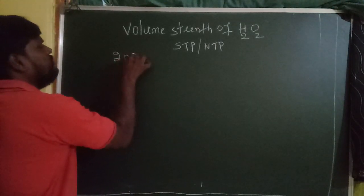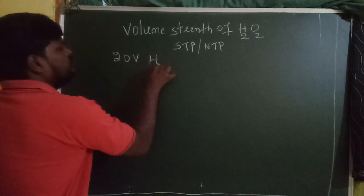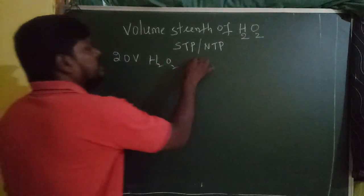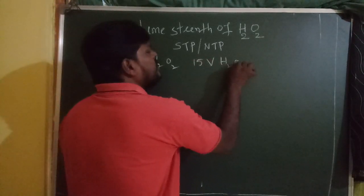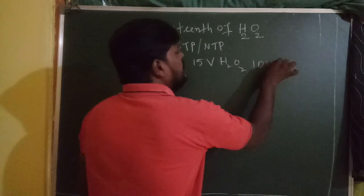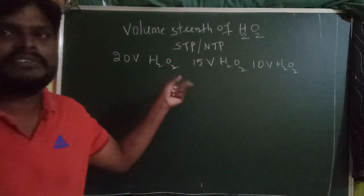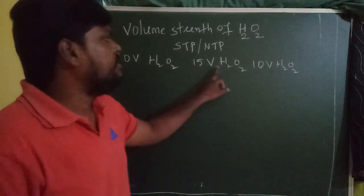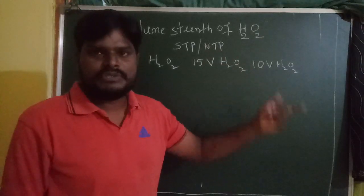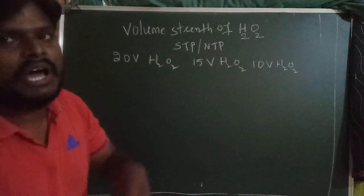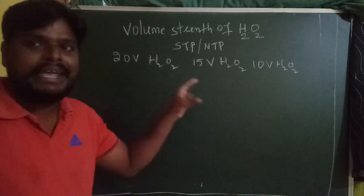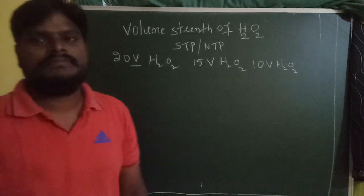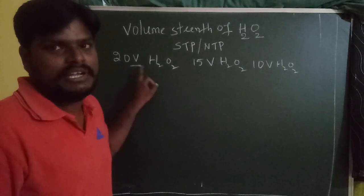Let's take an example: 20V H₂O₂. What is the meaning of 20V H₂O₂ at STP or NTP? Similarly, what is the meaning of 15V H₂O₂ and 10V H₂O₂? These are the types of values given in examinations. Here, 'V' stands for volume strength.